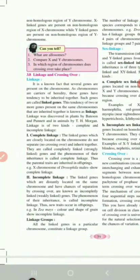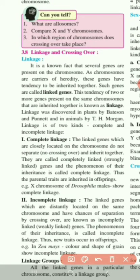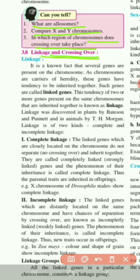Next topic is linkage and crossing over. Before starting this topic, recall these questions: What are allosomes? Compare X and Y chromosomes. In which region of chromosomes does crossing over take place? As we concluded, crossing over occurs in the homologous region, not the non-homologous region.